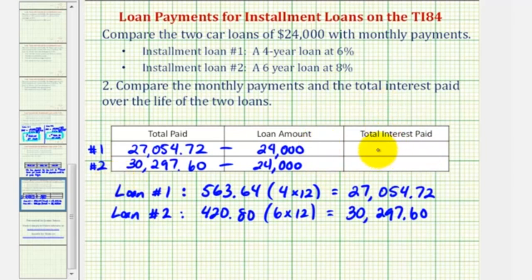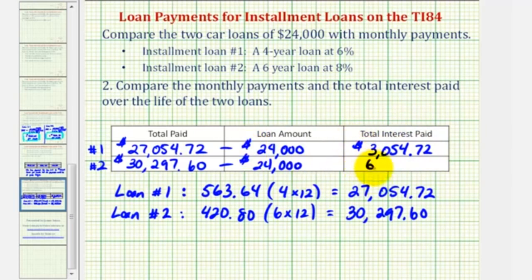For loan one, the total interest paid is $27,054.72 minus $24,000, which is $3,054.72. For loan two, the total interest paid is $30,297.60 minus $24,000, which is $6,297.60. Comparing these amounts, notice how the interest paid for loan two is more than double the interest paid for loan one.